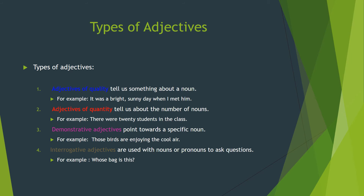The third type is demonstrative adjectives. 'Demonstrative' means to point something, to show something. So these adjectives point towards a specific noun. For example, 'Those birds are enjoying the cool air.' Imagine there are some birds flying in the air, and we say 'those birds are enjoying the cool air.' We are pointing towards those birds, so 'birds' is the noun and 'those' is its demonstrative adjective.